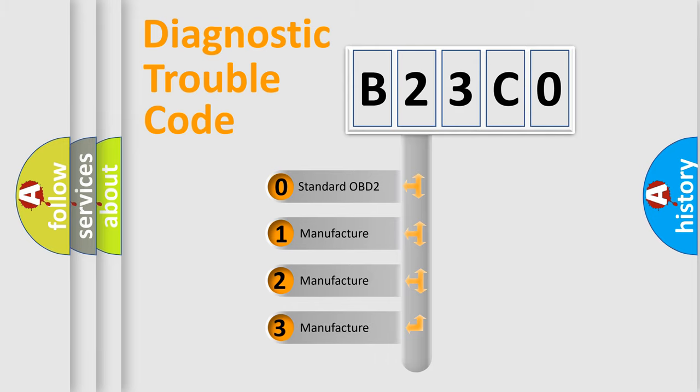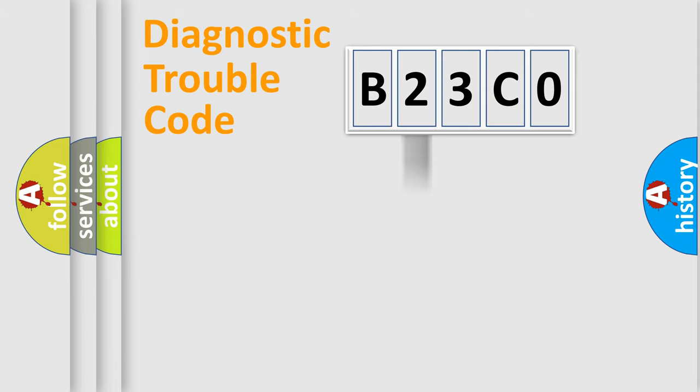If the second character is expressed as zero, it is a standardized error. In the case of numbers 1, 2, or 3, it is a manufacturer-specific expression of the car-specific error.